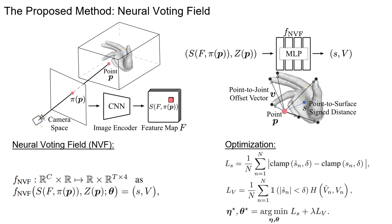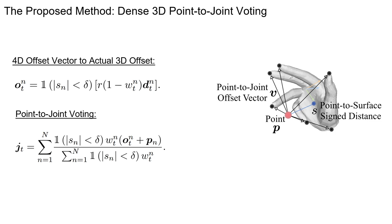To fully exploit the 3D local evidence and hand global geometry, we unify a signed distance function and the pose parameterization function using a pixel-aligned implicit function. For a 3D query point sampled in camera space, we define a continuous implicit function which maps from pixel-aligned image feature and depth of the query point to its signed distance to the hand surface and a set of 4D offset vectors. The signed distance is predicted to help learn the global hand geometry and to select near-surface points by thresholding the signed distances. We call this mapping the Neural Voting Field (NVF), realized by fully connected layers trained jointly with the image encoder by minimizing losses on the predicted signed distances and 4D offset vectors.